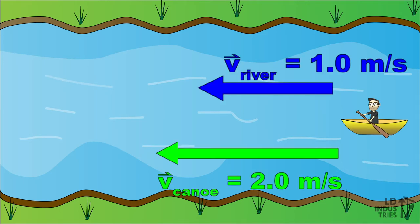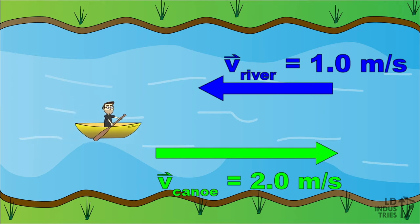So you probably know that if I paddle in the same direction as the river, my overall or resultant velocity will be 3 meters per second, and if I paddle in the opposite direction of the river, my resultant will be only 1 meter per second. So I go faster when the river is with me and slower when I'm against it. That makes sense.